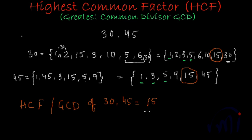So, the HCF — highest common factor, or GCD, greatest common divisor — of 30 and 45 is equal to 15. This is the result, and this is just the definition of highest common factor. In the next videos, we are going to learn methods of finding the highest common factor without finding all the possible factors of two numbers.